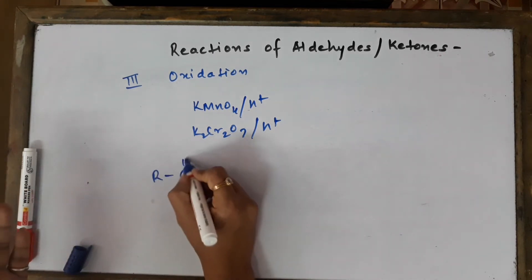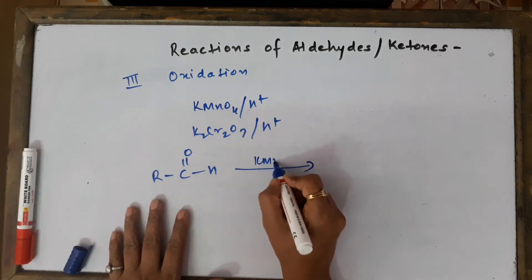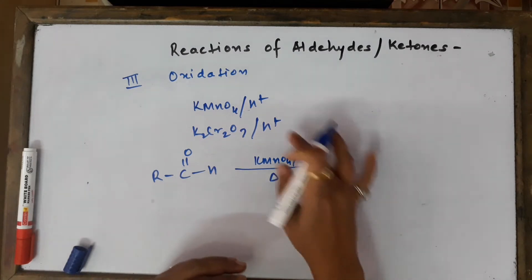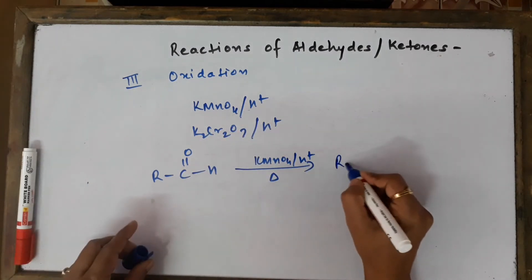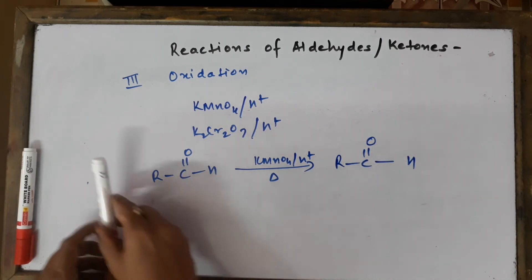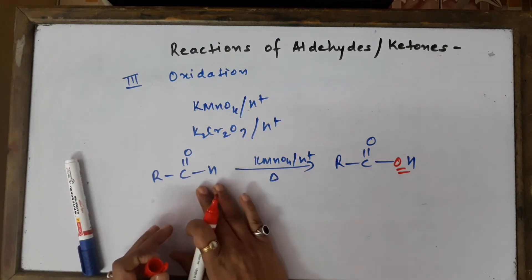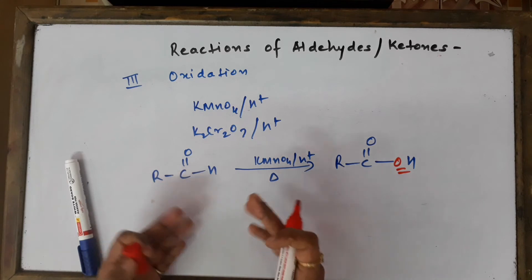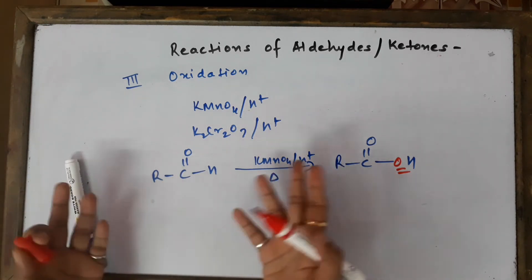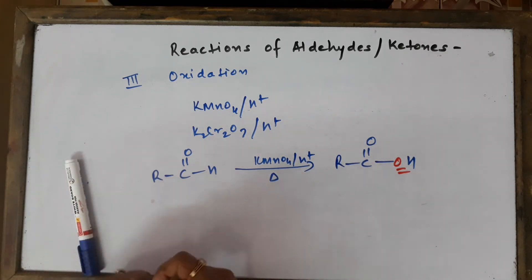If we start with an aldehyde and use a strong oxidizing agent like KMnO₄, it directly oxidizes the aldehyde to a carboxylic acid (RCOOH). Oxidation of an aldehyde is not very difficult — we simply add an oxygen atom to the aldehyde without any bond breaking. No carbon-carbon bonds are broken, so aldehyde oxidation is comparatively a very easy task.